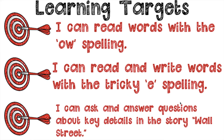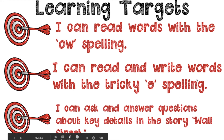Let's look at our I Can targets one more time: I can read words with the O spelling — OW and O. I can read and write words with the tricky E spelling. And I can ask and answer questions about key details in the story Wall Street. Have a great day!